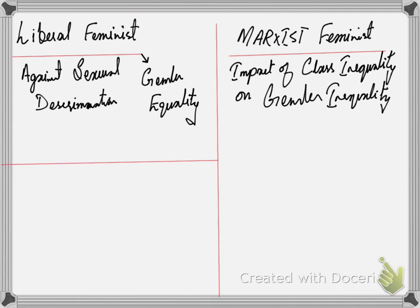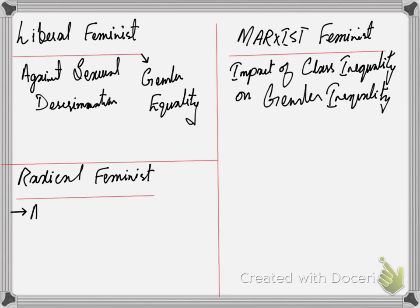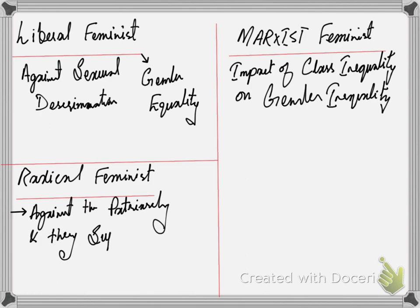The third type is radical feminists. Radical feminists are against the patriarchy and they support matriarchy — female dominancy. These are their radical ideas, and they are having differentiated views about the way society should be restructured.